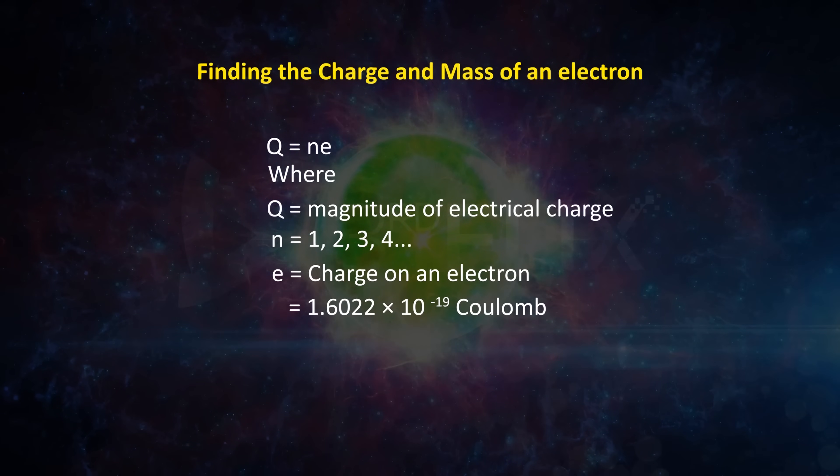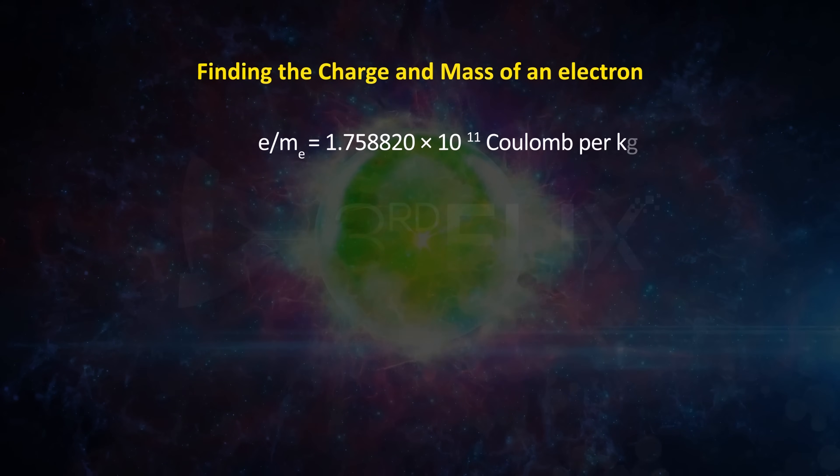Let's see how. We know that charge per mass e/m ratio of electron is equal to 1.758820 times 10 to the power of 11 coulomb per kg. Charge on an electron e is equal to 1.6022 times 10 to the power minus 19 coulomb.